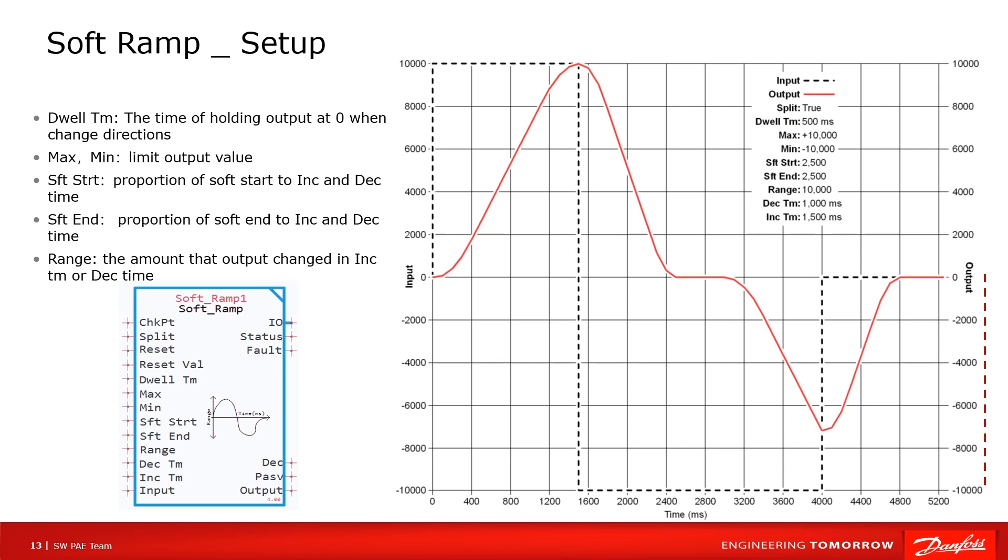Maximum and minimum are the limit value of output signal. Soft start and soft end range from 0 to 10000, means 0 to 100%. Stand for the proportion of soft start and soft end to increase and decrease time.